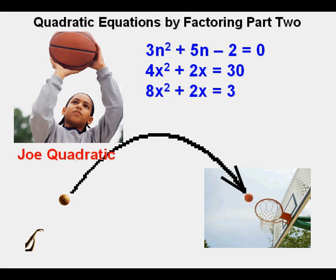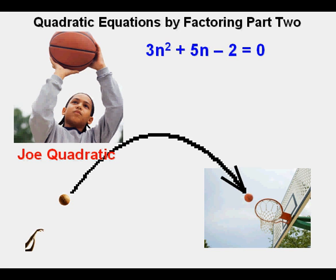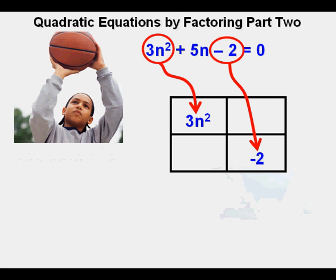Joe will first try to solve the equation 3n squared plus 5n minus 2 equals 0, which was the first equation Joe tried to solve in the introduction of quadratic equations before he learned to solve them. Joe sets up his box and puts the squared term, 3n squared, in the upper left corner and the constant term, negative 2, in the lower right corner of the box.